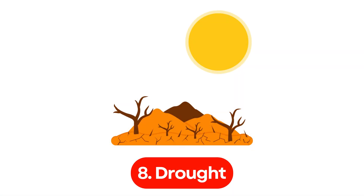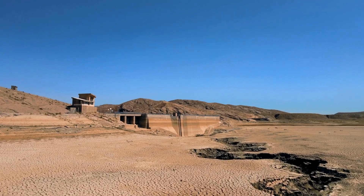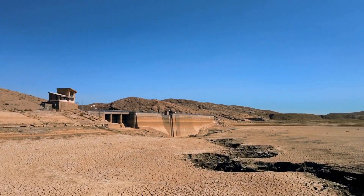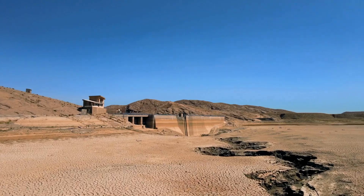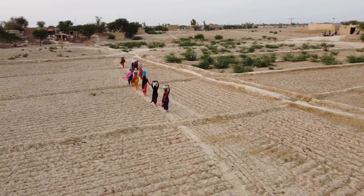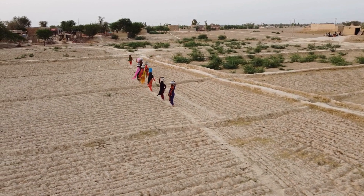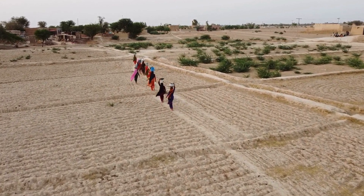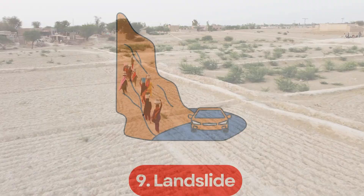Number 8. Drought. A drought is a prolonged period of low rainfall, leading to water shortages, crop failure, and food scarcity. It can also cause wildfires and have devastating economic effects.